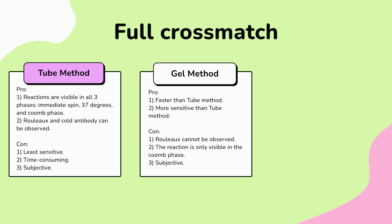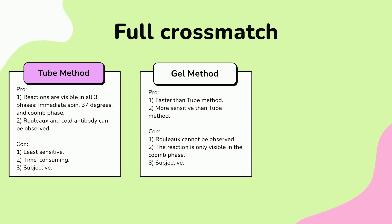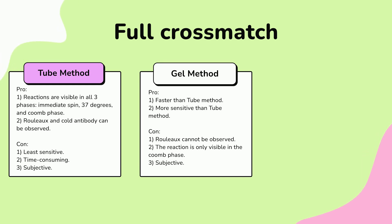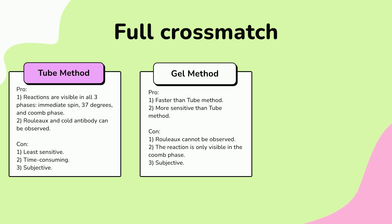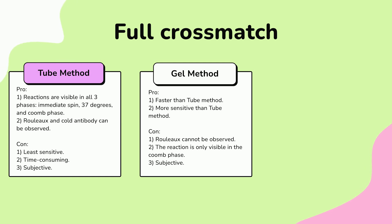Gel crossmatch — pros: faster than tube crossmatch, more sensitive than tube crossmatch. Cons: cannot identify rouleaux, you only see results in the Coombs phase, and it is also subjective.